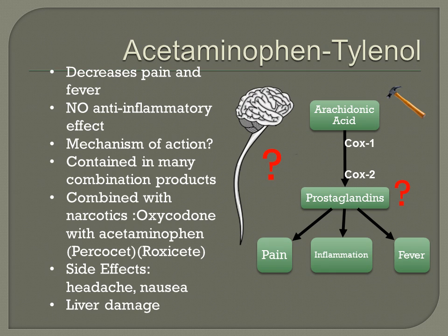Side effects of acetaminophen include headache and nausea. Liver damage is the most serious side effect and can be fatal. Acetaminophen is broken down in the liver and creates several byproducts. If acetaminophen builds up in the liver, the pathway that eliminates these byproducts becomes overloaded, and the liver must use another pathway. When this happens, a toxic compound called NAPQI is made, and that's what causes the liver damage.